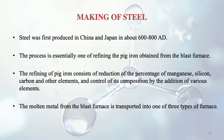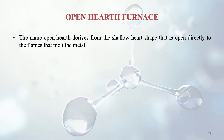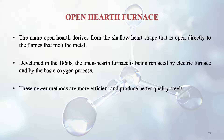The molten metal from the blast furnace is transported into one of three types of furnace for steel making: the open hearth, electric and the basic oxygen furnace. The open hearth furnace derives its name from the shallow hearth shape that is open directly to the flames that melt the metal. Developed around 1860, it is now being replaced by the electric furnace and the basic oxygen furnace, because these newer methods are more efficient and produce better quality steels.